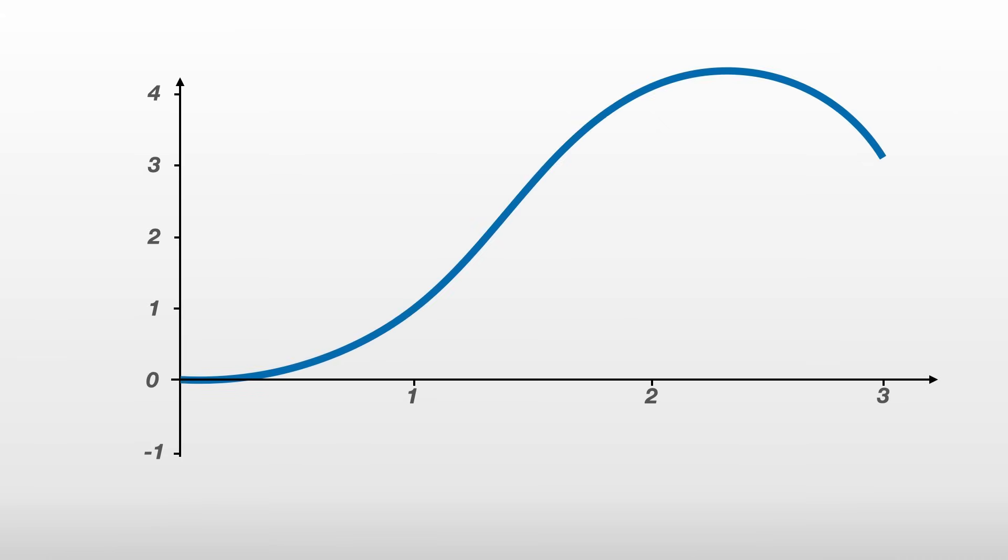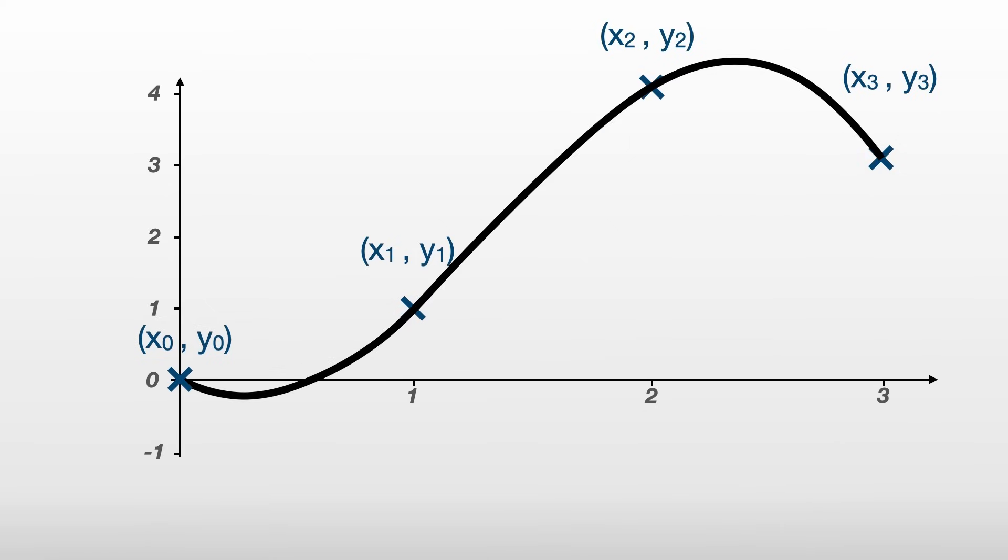Suppose you want to approximate some function, but you're only given its value at a finite set of points we call nodes. Lagrange interpolation is able to produce a polynomial which goes through all the points.